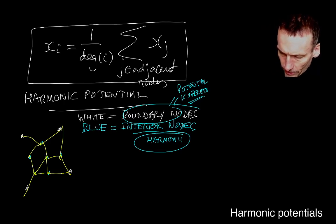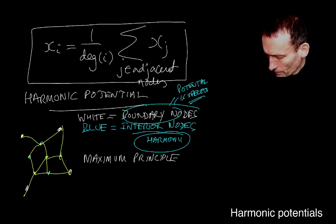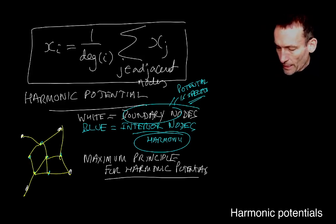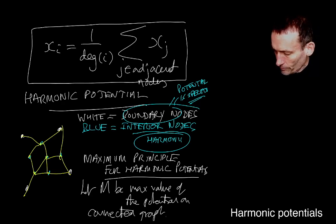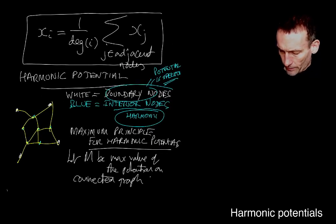Let me just tell you about an important result known as the maximum principle for harmonic potentials. It's a very important result, and there's actually a minimum principle too, which I'll explain afterwards. So let M be the maximum value of the potential on a connected graph, just like the one I've drawn here.